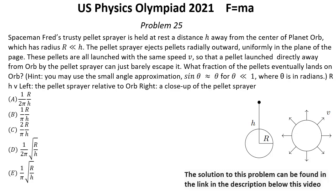Problem number 25. Spaceman Fred's rusty pellet sprayer is held at rest a distance h away from the center of planet Orb, which has radius R much less than h.